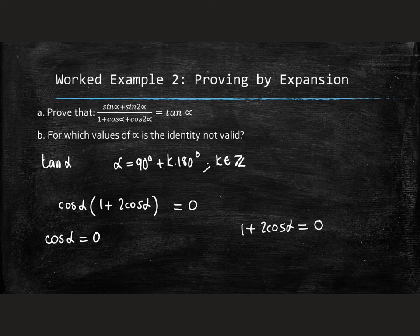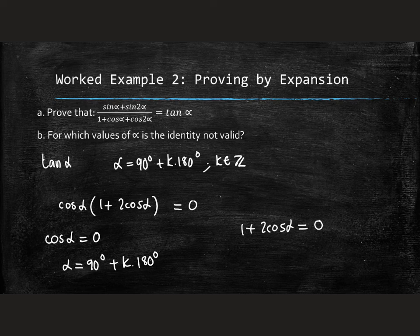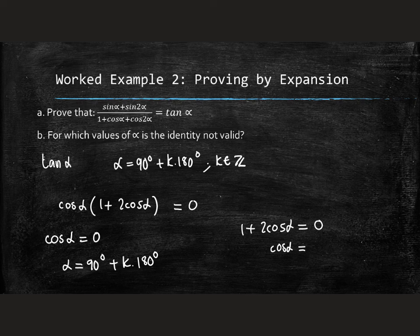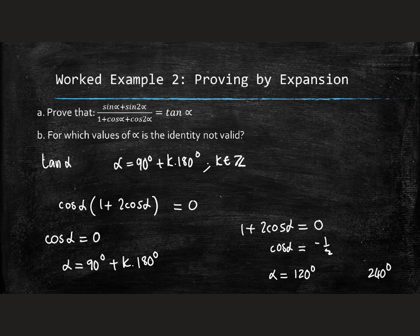On the left hand one, that would only happen if α was equal to 90 degrees. Again, k times 180, as we saw for the tan. On the right hand one, if we neaten this up a bit, we would get cos of α equals negative one half. And that's only going to happen in two places, either at 120 degrees or at 240 degrees. And both of those, we would have to worry about multiples of k360.